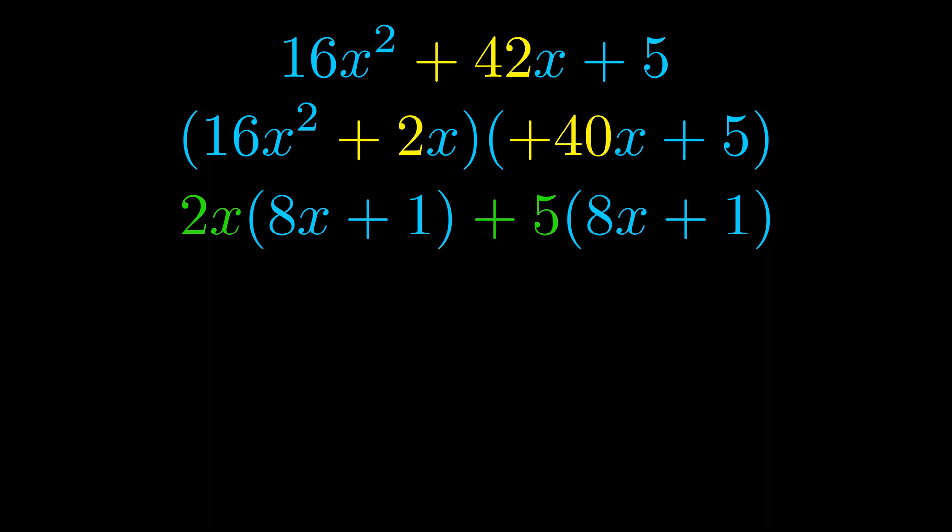Notice also how what remains inside of the parentheses is the same in both cases. The blue values are the same. Those blue values will become one of our factors and we will combine the two green values, the GCFs that we pulled out, to get the other one. And that is our fully factored equation.